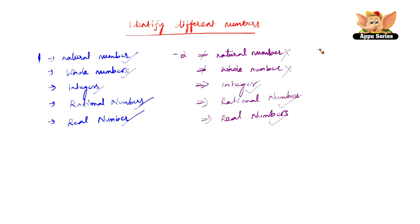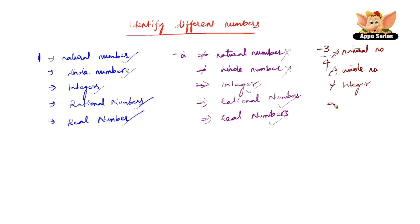Let us take another number: minus 3 by 4. Now minus 3 by 4 is not a natural number, it is not a whole number, it is not an integer, but it is a rational number, and it is a real number.